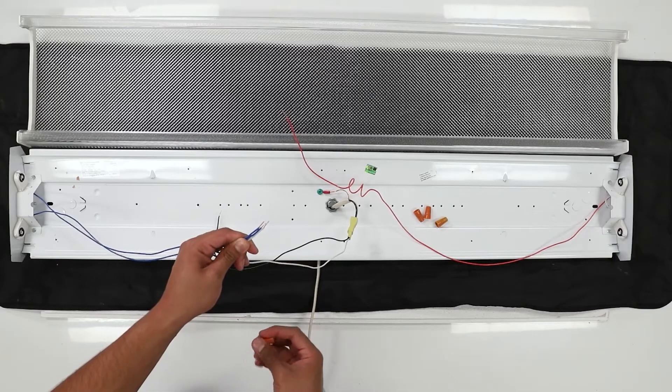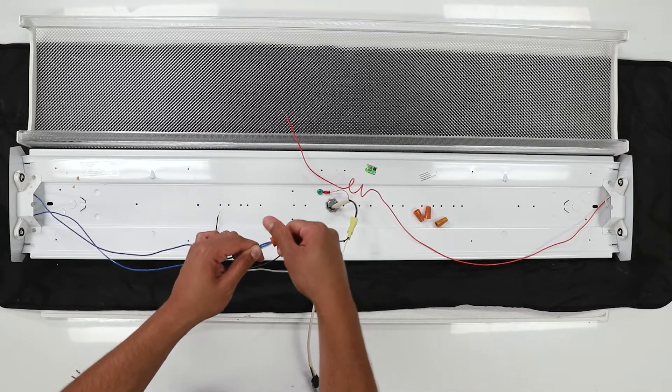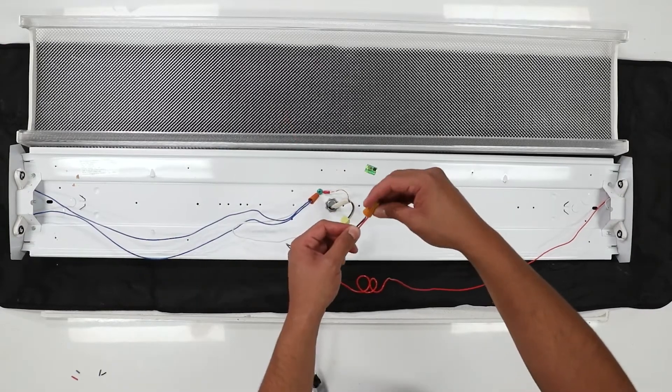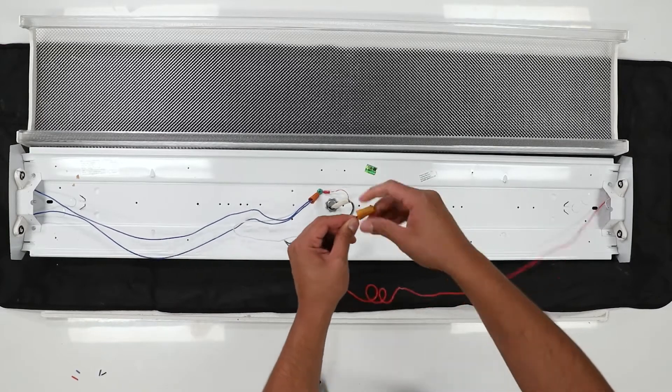Connect one side of the fixture's wires to the neutral wire, then secure them with a wire connector. Repeat the previous step using the hot wire. Make sure your wires are secure and fully encased in the wire connector.